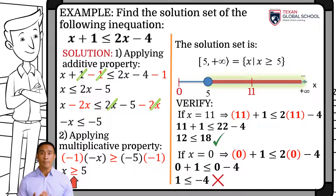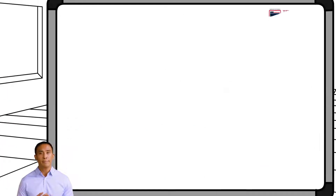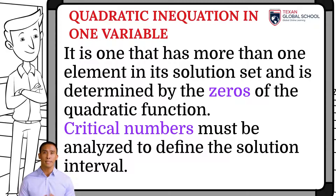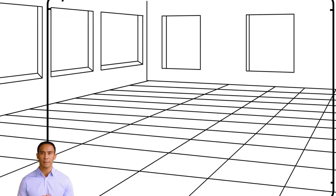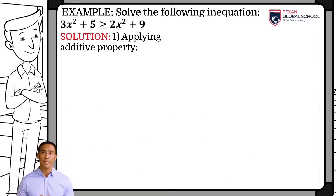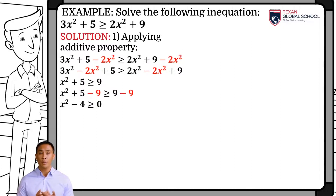A quadratic inequation in one variable has more than one element in its solution set and is determined by the zeros of the quadratic function. We must obtain and analyze the critical numbers to define the solution interval. We will use the processes seen in previous classes to solve quadratic equations. This example will obtain the solution set of the following quadratic inequality in one variable. We will apply the additive property to group and simplify like terms, with the goal of having all terms on the left-hand side, so we can obtain the zeros of the quadratic expression.